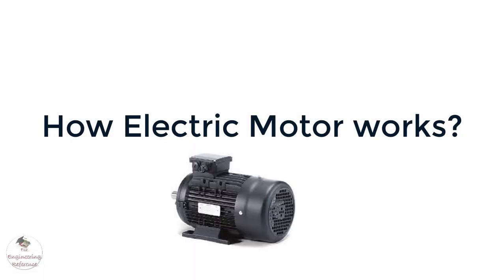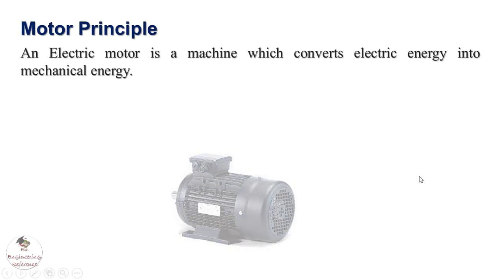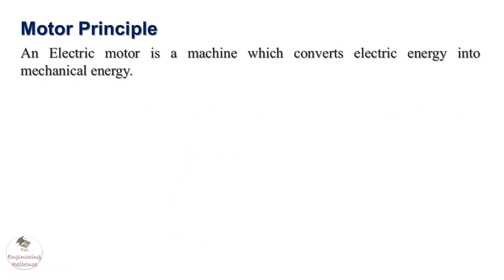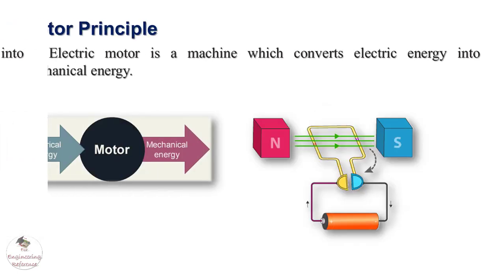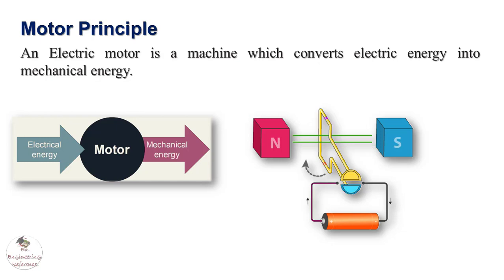Hi, in this video, we are going to see how an electric motor is working. An electric motor is a device converting electrical energy into mechanical energy. This conversion is usually obtained by generating a magnetic field through a current flowing into one or more coils.